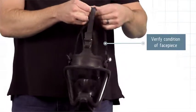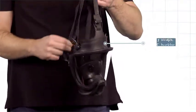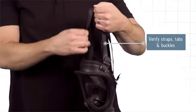Then, verify the condition of the facepiece. Start by inspecting the straps, tabs, and buckles, then the harness.